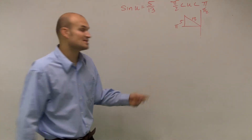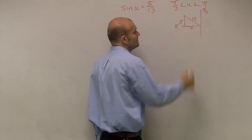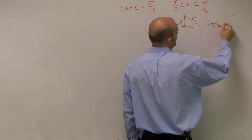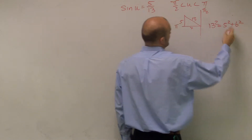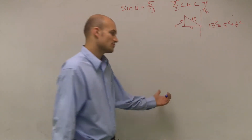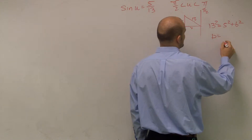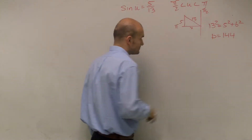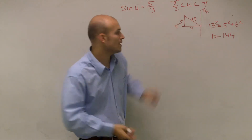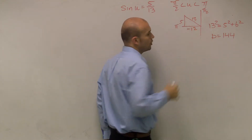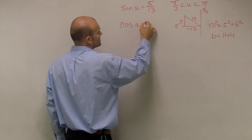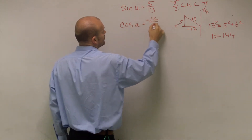Now I need to figure out what the cosine value is. Remember, cosine is going to be your adjacent side. To find that, I can use the Pythagorean theorem. Subtracting: 169 minus 25 equals 144, and the square root of 144 is 12 — this is actually a Pythagorean triple. Since we're taking the square root, we deal with plus or minus, and since this is in the second quadrant, our x value is negative 12. Therefore, cosine of u equals negative 12 over 13.